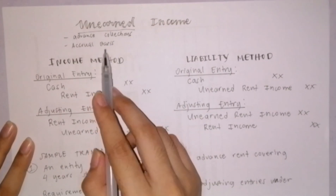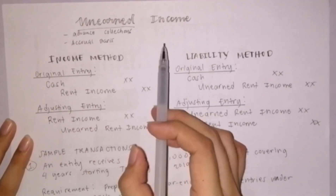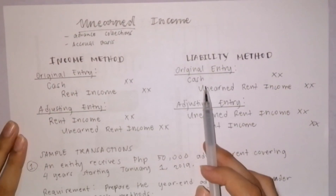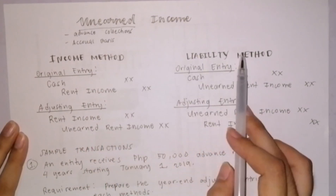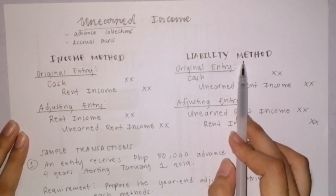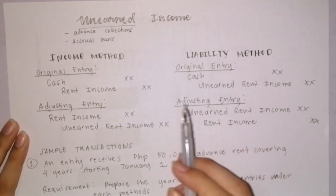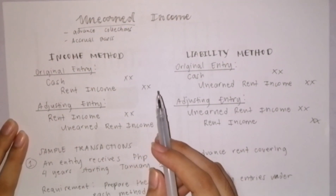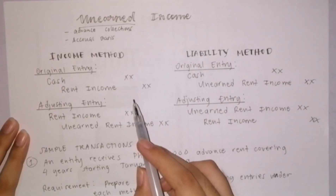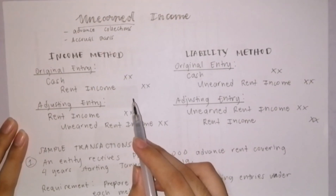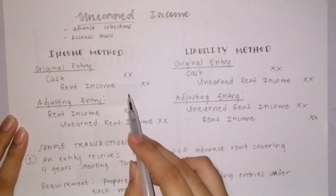And there are two methods in recording unearned income. First is the income method, and second is the liability method. Let's start with the first method, which is the income method.